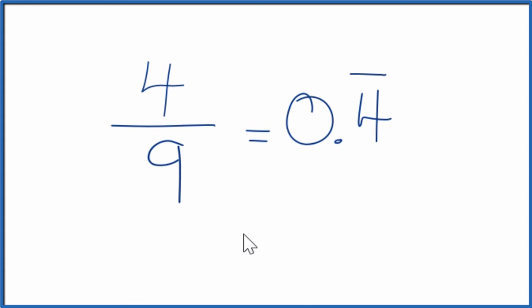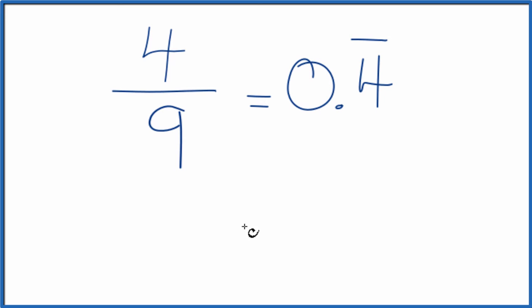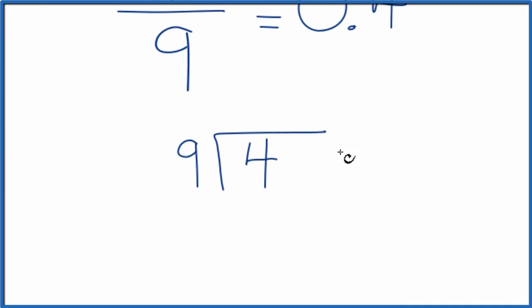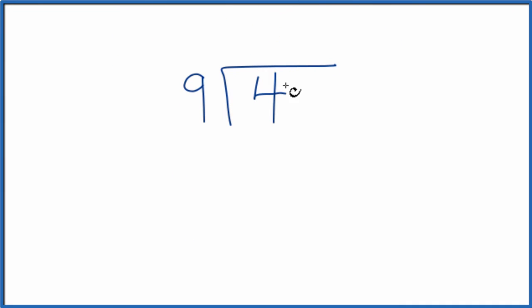The other way is you could just take 4 and you could divide it by 9. So there's 9 and we want to know how many times it goes into 4. It doesn't go into 4 but if we call this 40, we could put a 0 and a decimal point up here. So now 9 times 4, that's 36 and 40 minus 36 is 4.